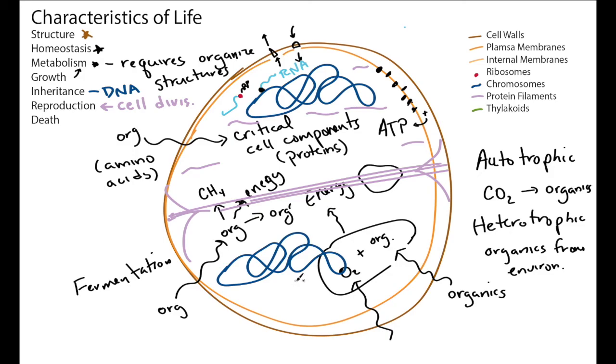But if it doesn't work, the cell dies. If you think about ways that cells can die, there are of course many of them. Basically, breaking the cell wall can do it. Not having enough resources for energy can do it. Not having the organic molecules for the critical cell components can do it. Problems and mutations in the DNA that kill parts of the recipe can cause death. So there are many different things that can cause death.